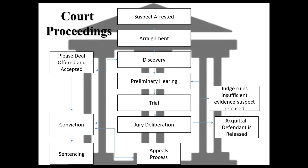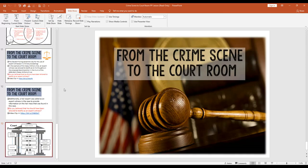After trial, the jury listens to both the prosecution and the defense, then deliberates. A conviction or acquittal is issued; if there is an acquittal, the defendant is released. If there is a conviction, sentencing follows. Even then, the case may not be over — our judicial system offers an appeals process, and with an attorney a convicted individual can appeal. And that ends our first unit in forensics.